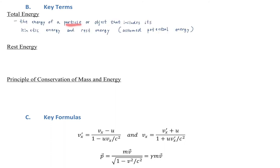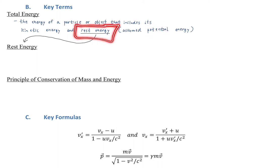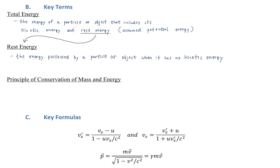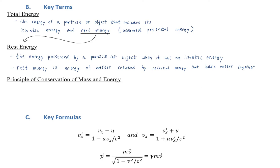Total energy is the energy of a particle or object that includes its kinetic energy and its rest energy, assuming a potential of zero. This begs the question: what is rest energy? Rest energy is the energy possessed by a particle or object when it has no kinetic energy and again assuming no potential.